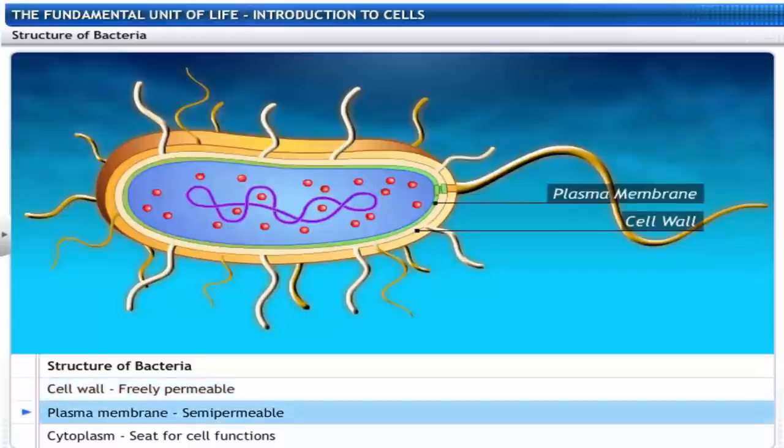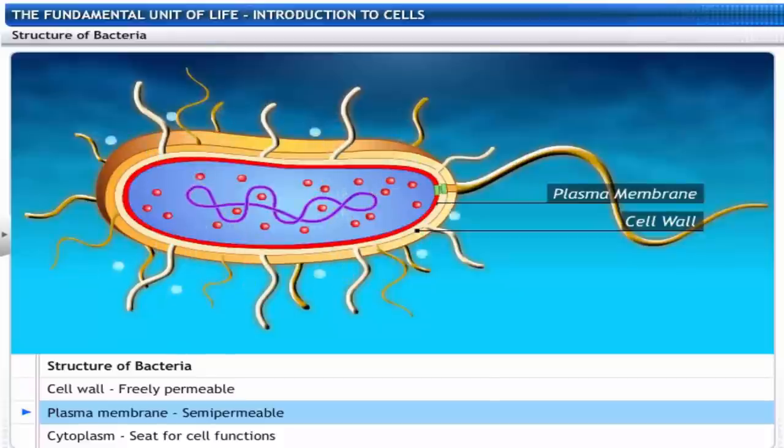The cell wall is a non-living layer composed of polysaccharides and proteins. The plasma membrane is a living membrane made of lipids. It is selectively permeable. Hence, it transports ions, nutrients and wastes across the membrane.